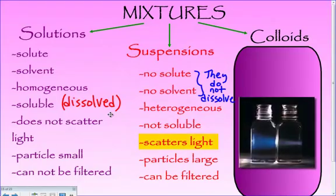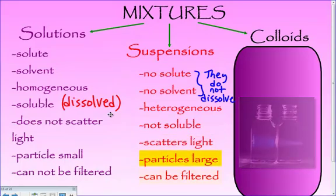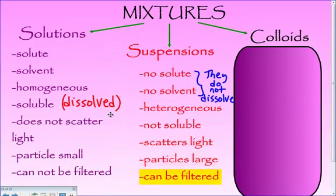Suspensions scatter light because the particles are large. You can also trap them in a filter. For instance, the book showed sulfur and water — you were able to trap the sulfur in the filter while the water came through. Similarly, if you had sand and water, you can filter it and trap the sand while the water goes straight through. The particles are large enough to trap in a filter and large enough to scatter light.